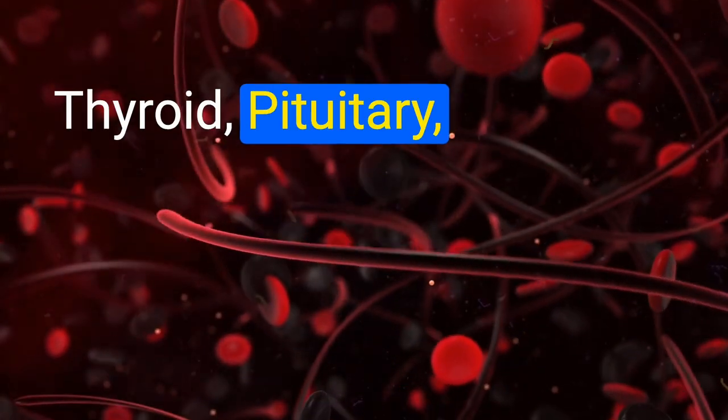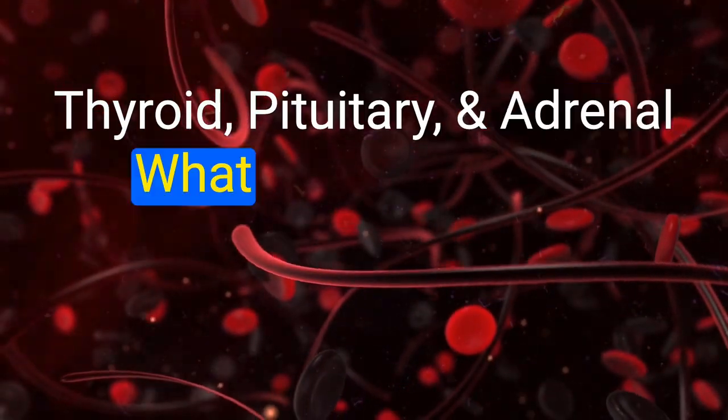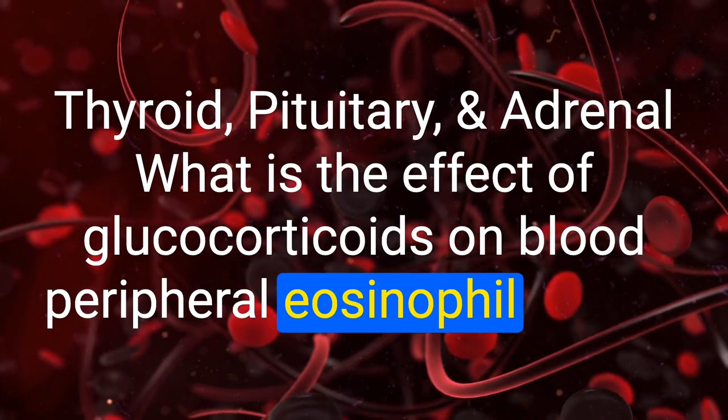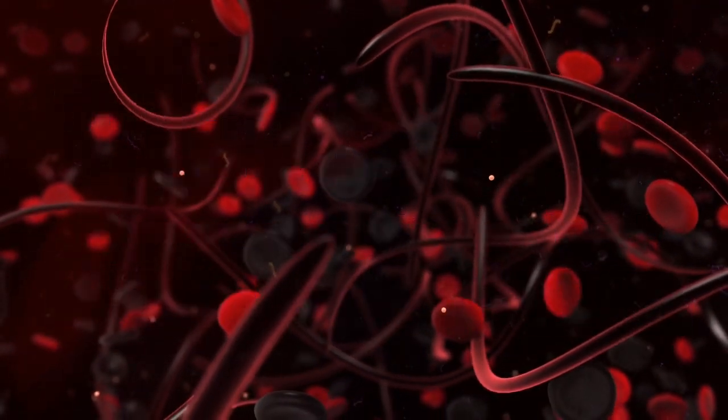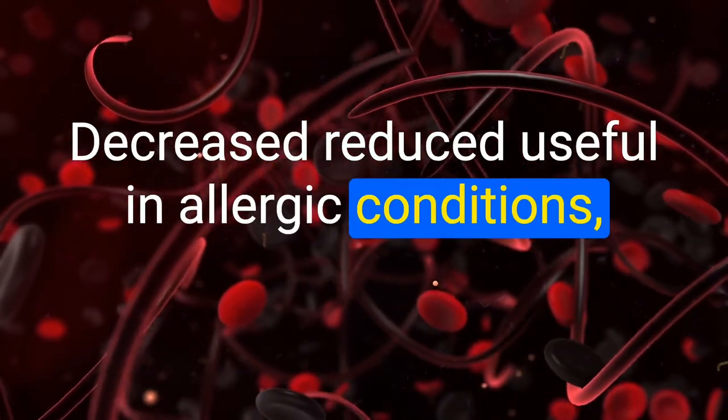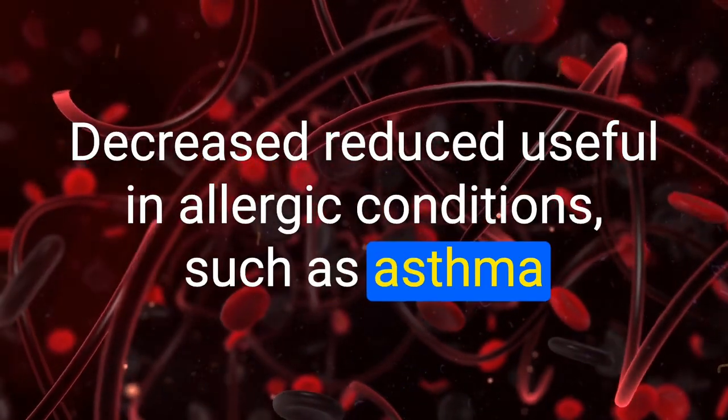What is the effect of glucocorticoids on peripheral blood eosinophil levels? Decreased — this is useful in allergic conditions such as asthma.